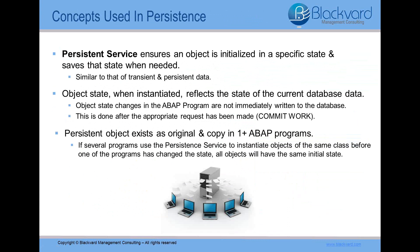Basically, a persistent object exists as an original in the database and as a copy in one or more ABAP programs. If several programs use the persistent service to instantiate objects of the same class before one of these programs has changed the state using the commit work command, then the objects will all have the same initial state. Please note that at present, the persistent service lock concept has not been implemented yet, which would ensure that there is only one transient mapping for each persistent object. So ultimately, ABAP programmers are not really working with persistent objects as such, but rather the persistent service makes it appear as if they are.